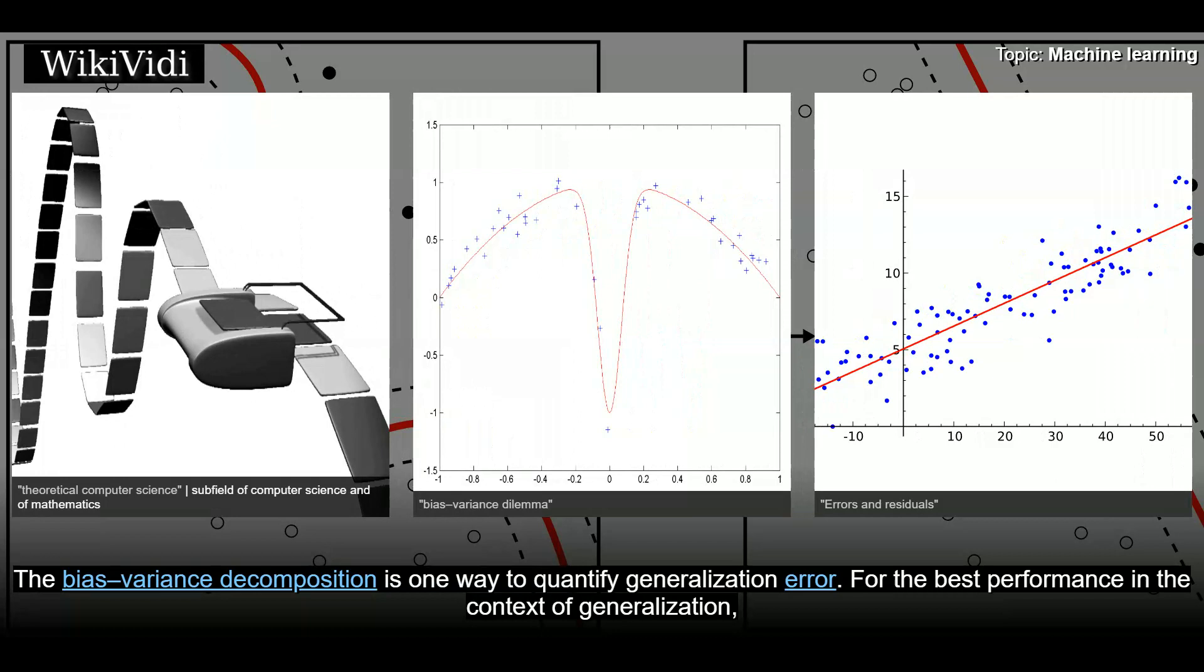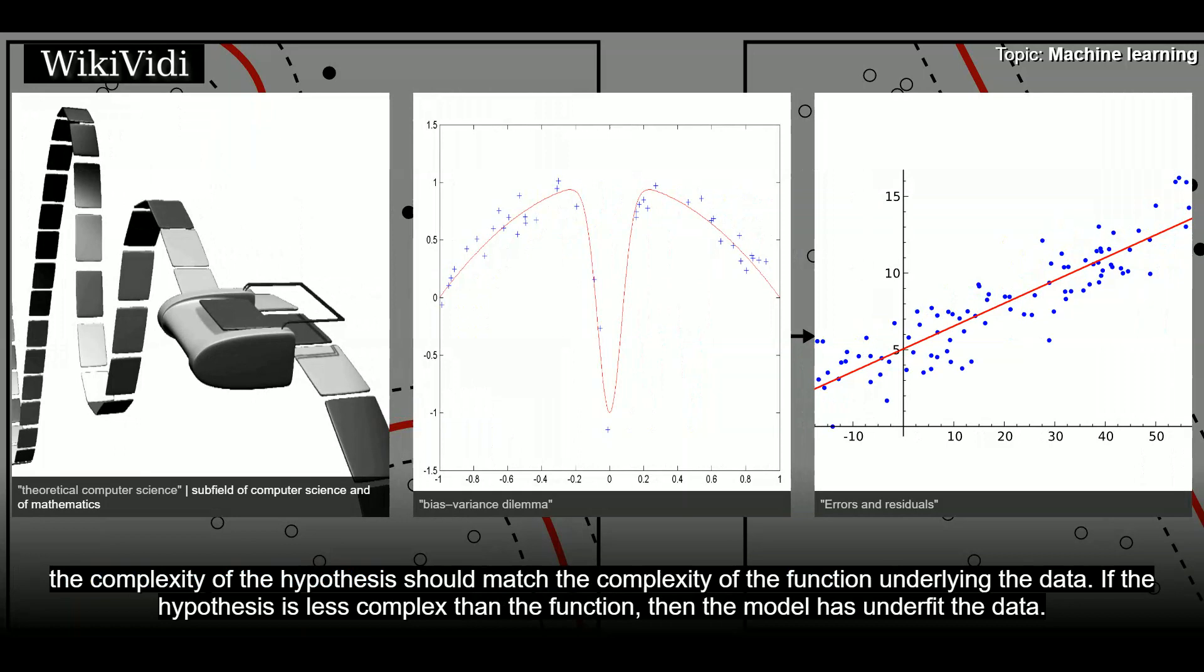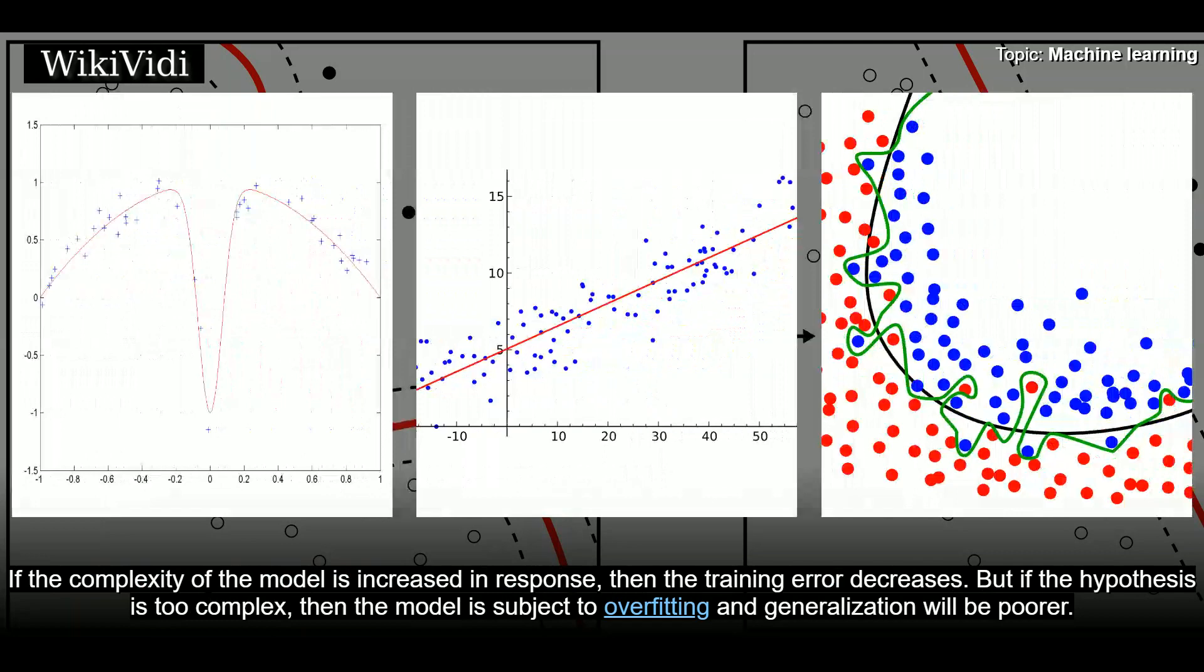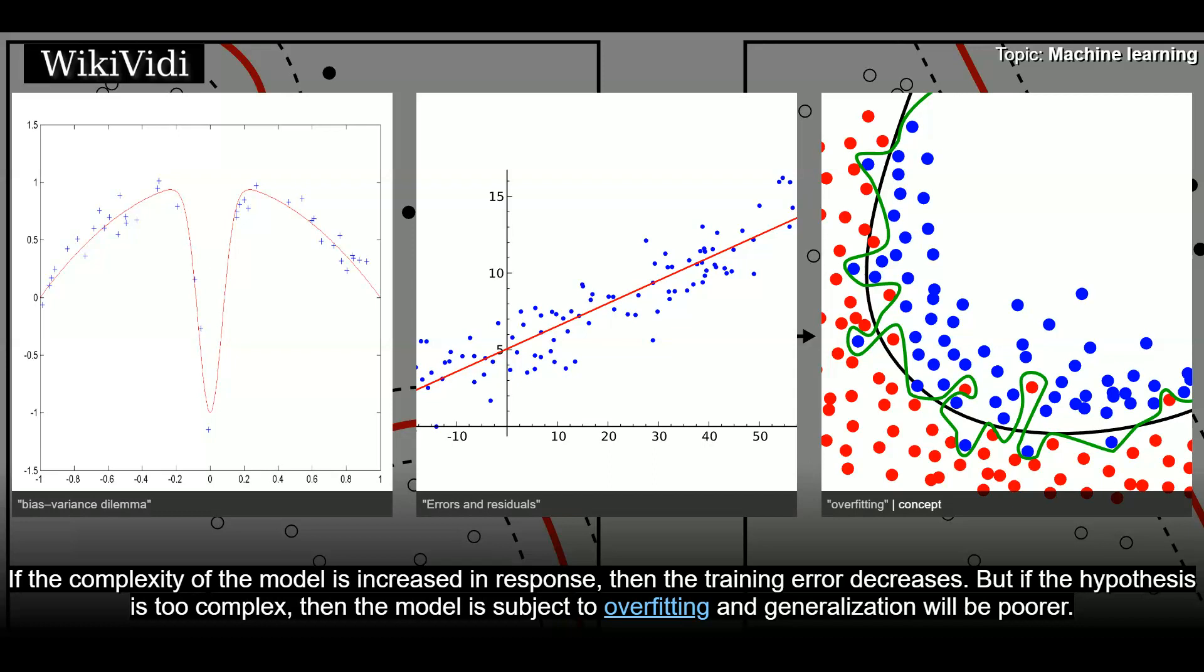The bias-variance decomposition is one way to quantify generalization error. For the best performance in the context of generalization, the complexity of the hypothesis should match the complexity of the function underlying the data. If the hypothesis is less complex than the function, then the model has underfit the data. If the complexity of the model is increased in response, then the training error decreases. But if the hypothesis is too complex, then the model is subject to overfitting and generalization will be poorer.